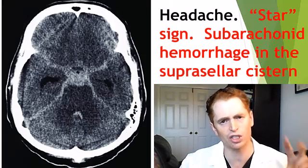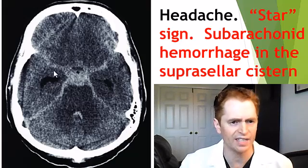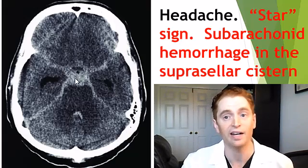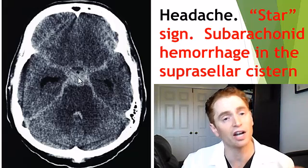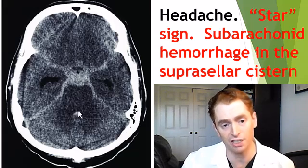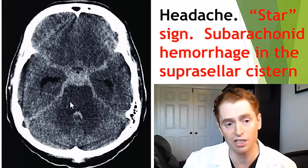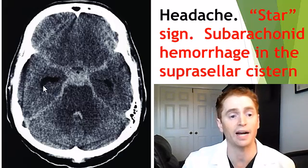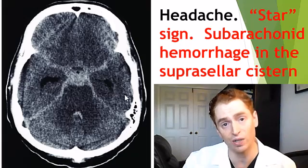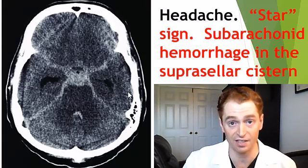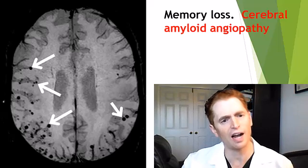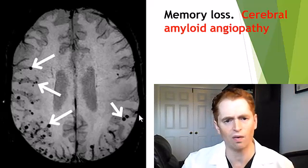This CAT scan done on someone with headache shows the star sign. This bright signal — high attenuation — is blood in the suprasellar cistern, generally from a ruptured brain aneurysm. You can also see some blood in the quadrigeminal cistern. There's also enlargement of the temporal horns of the lateral ventricles, consistent with secondary hydrocephalus.